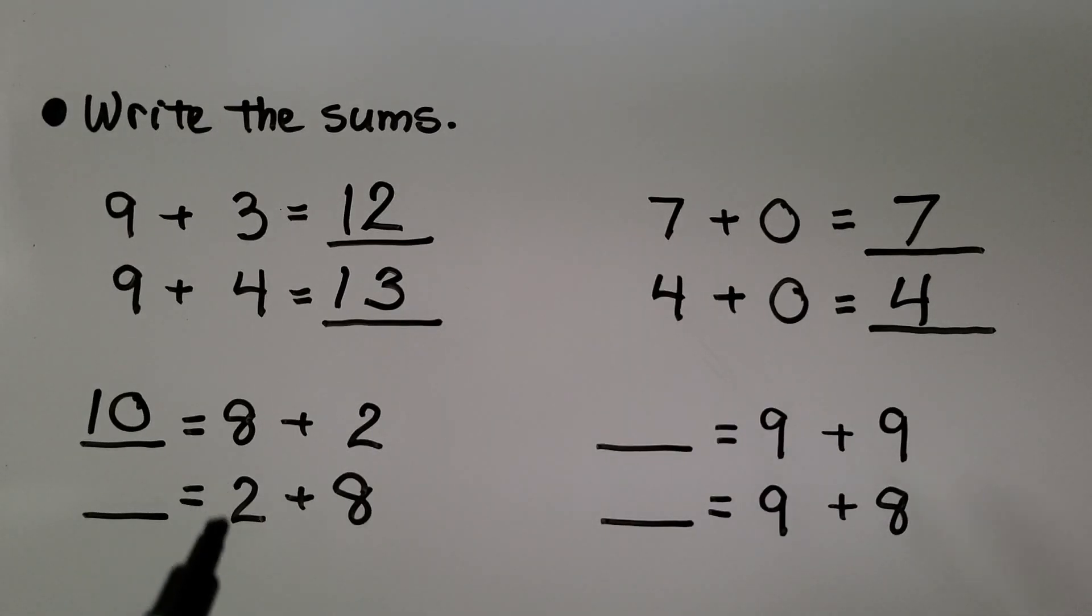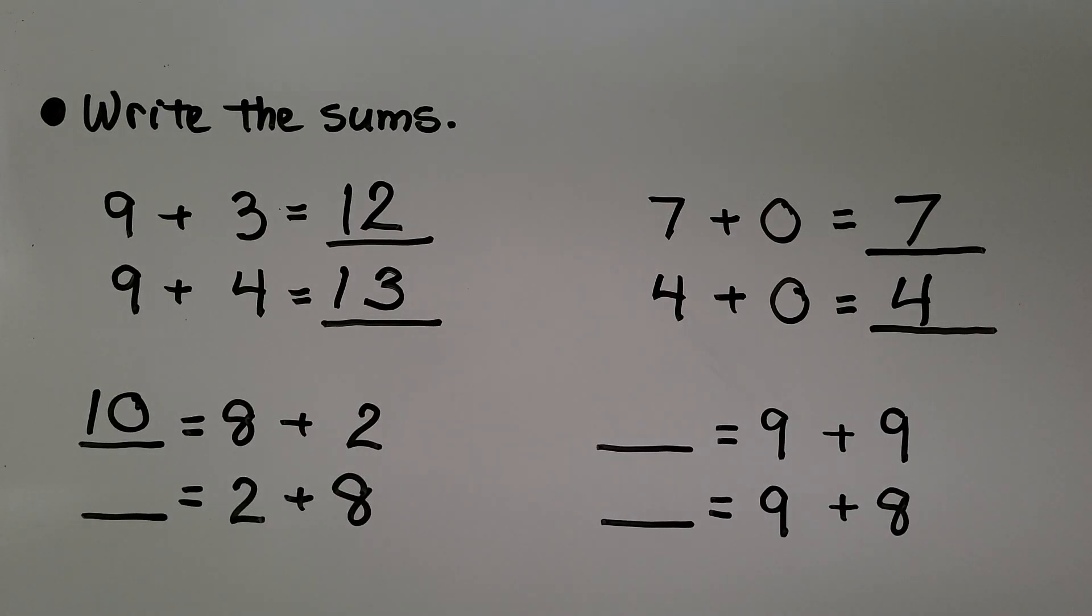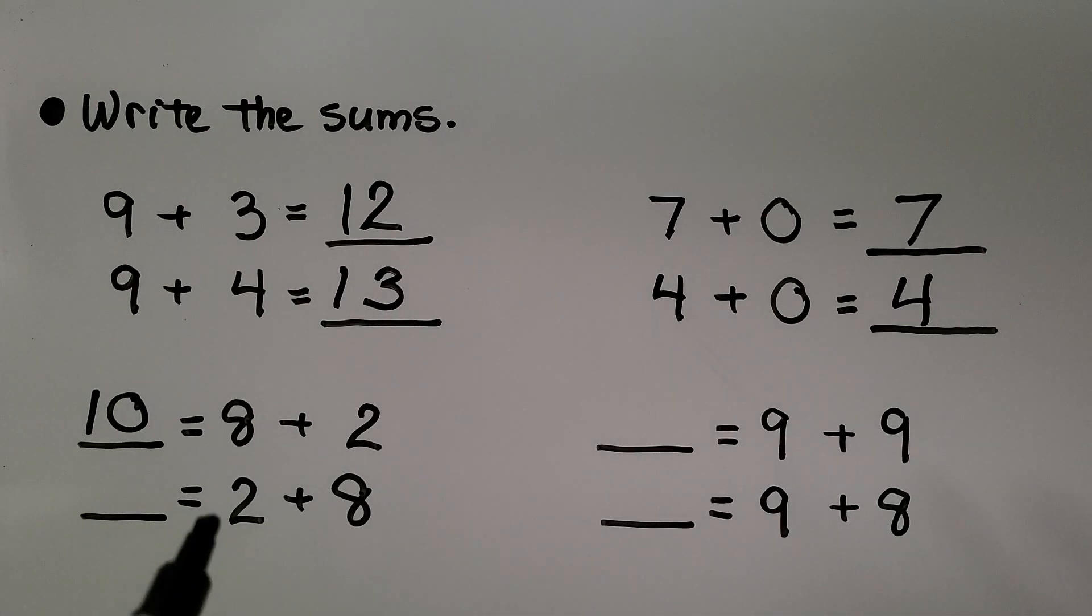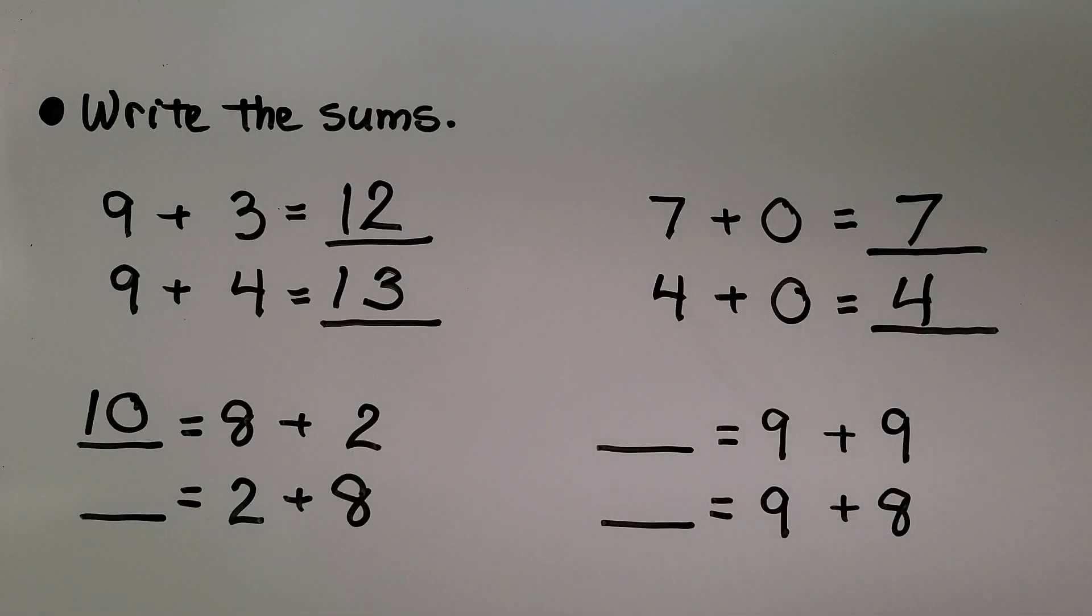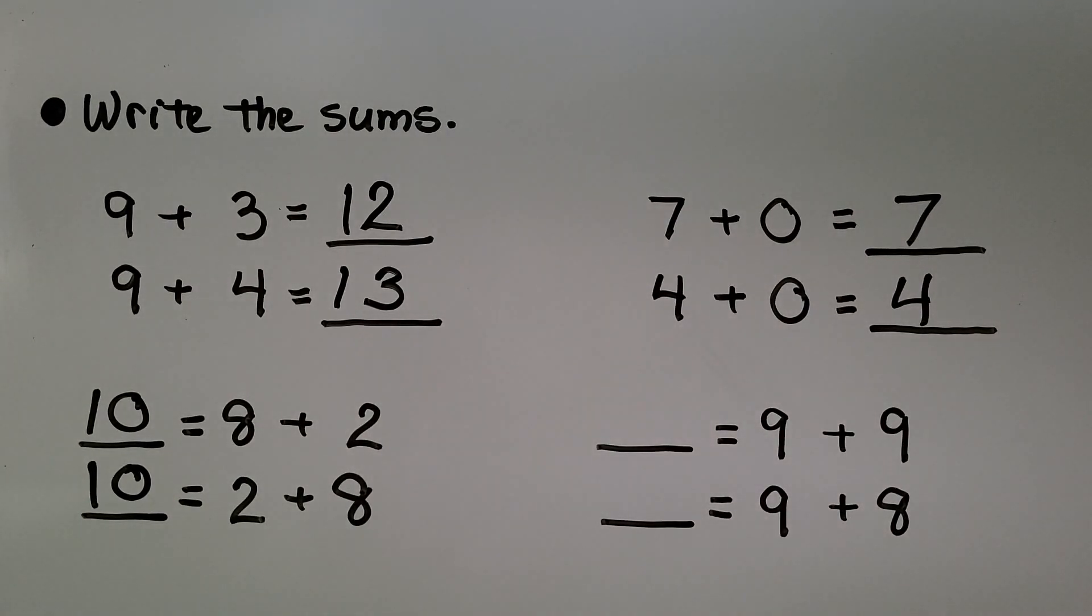Here we have 2 plus 8. We have the same addends, they're just in a different order. 8 plus 2 is equal to 10, and 2 plus 8 is equal to 10. We can add numbers in any order and get the same sum.